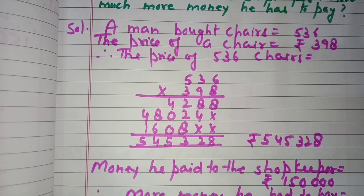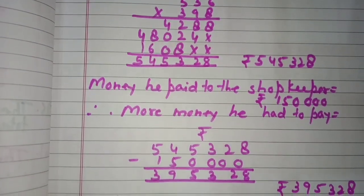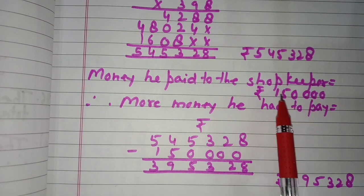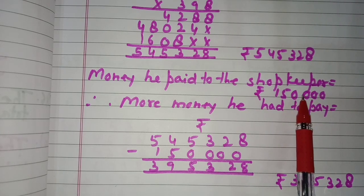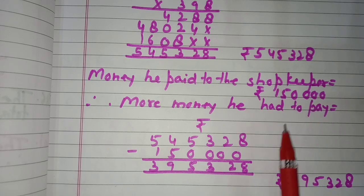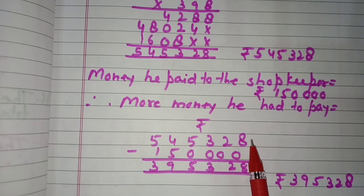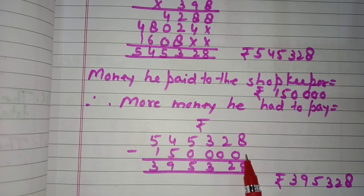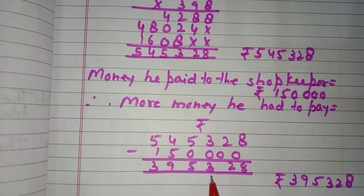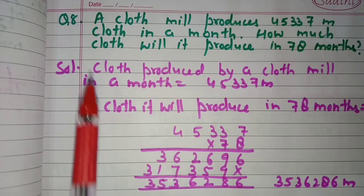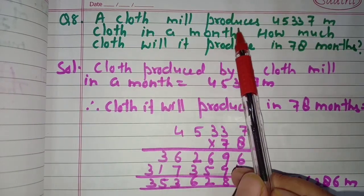The man paid only rupees 1,50,000 to the shopkeeper. Therefore, more money he has to pay — we subtract 1,50,000 from 5,45,328. The remaining balance is rupees 3,95,328. So he still has to pay rupees 3,95,328.